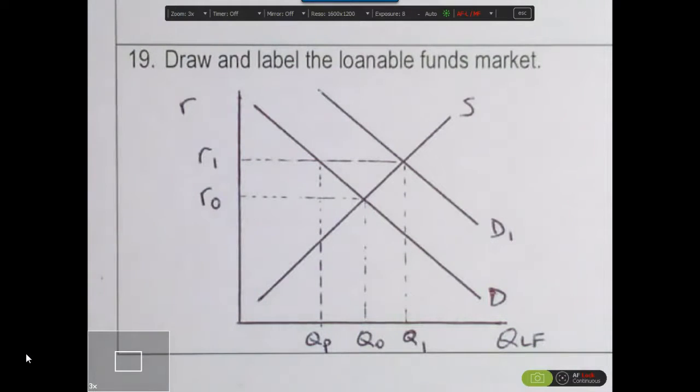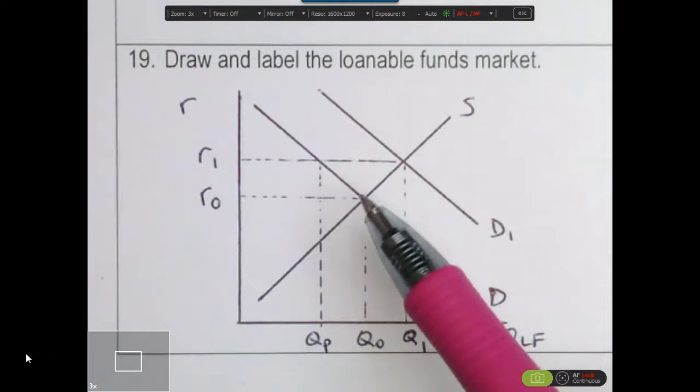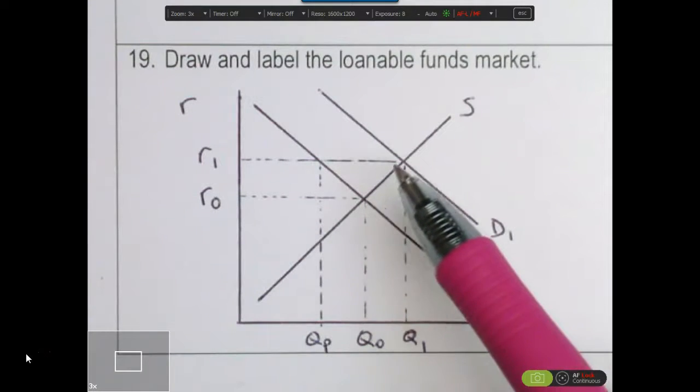So what happens in the situation where there's crowding out is that the government is going to increase its level of borrowing. So the demand for loanable funds is going to shift to the right, increasing the total number of loanable funds being taken in the market. And as a result, we're going to see the interest rate rise from R0 up to R1.